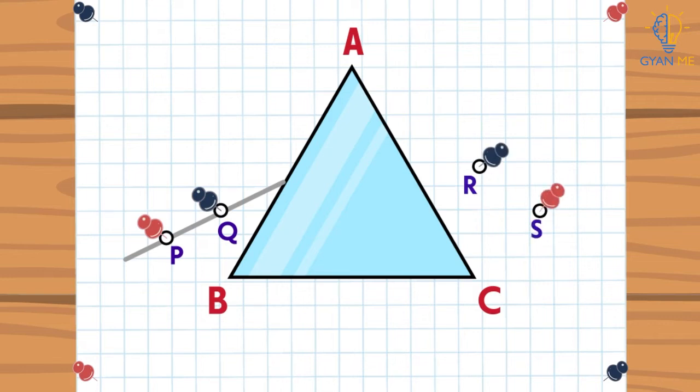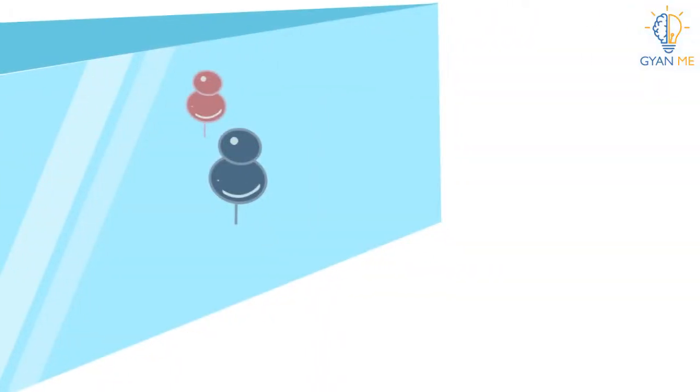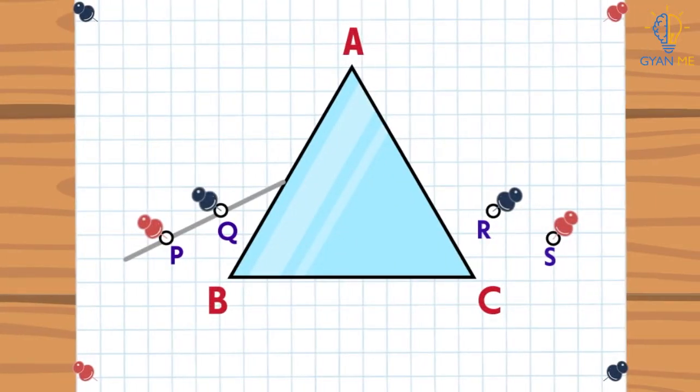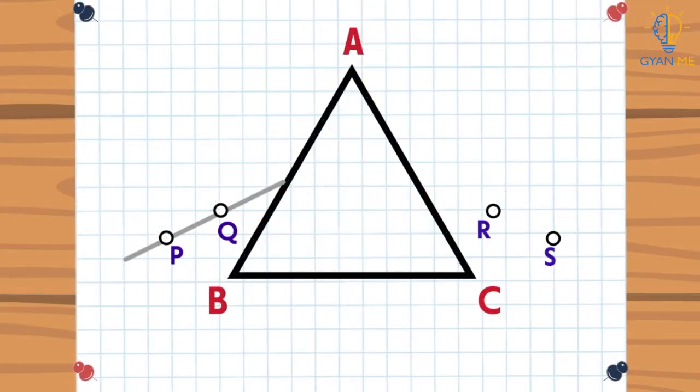But wait, you don't have to fix these pins R and S randomly. Fix them such that the pins at R and S and the images of the pins P and Q which you can see through this AC surface, they all lie on the same straight line just the way you can see on your screen. Next, remove the pins and the glass prism and complete the figure like this.